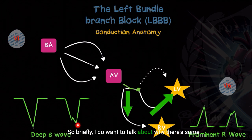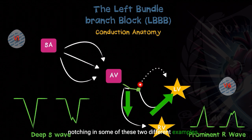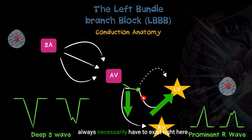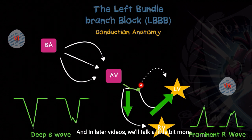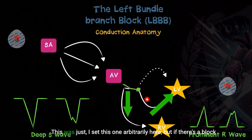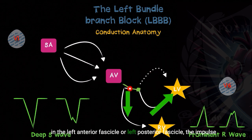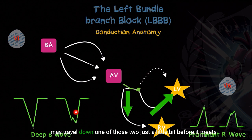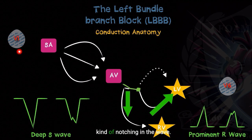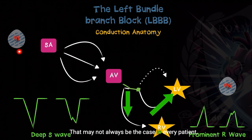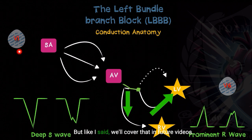I do want to talk briefly about why there's some notching in these examples. The block doesn't always necessarily exist at the same location — it could exist in the left posterior fascicle, and in later videos we'll talk about identifying exactly where that block may be. If there's a block in the left anterior or left posterior fascicle, the impulse may travel down one of those two a little bit before it meets the block, and that's usually responsible for the notching in the wave. You may need to use axis deviation to help figure out which is which, and we'll cover that in future videos.